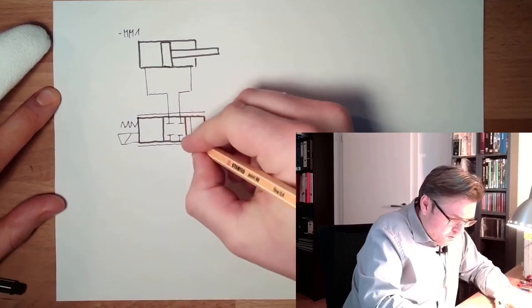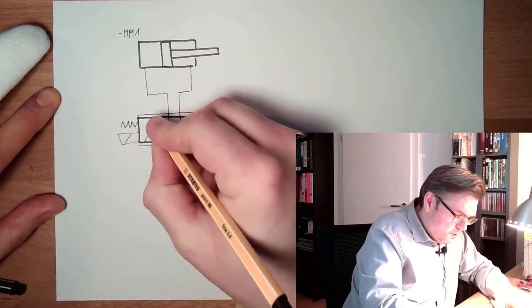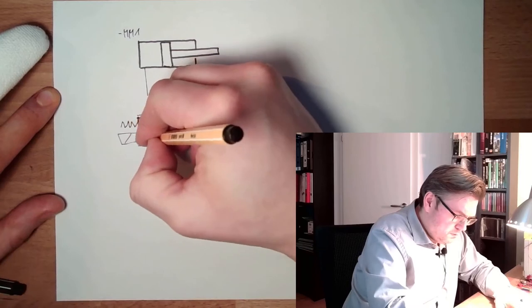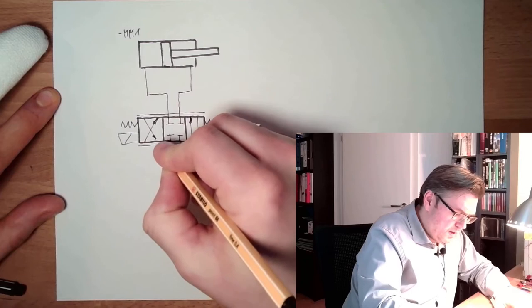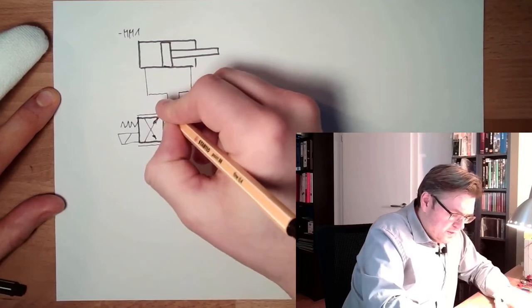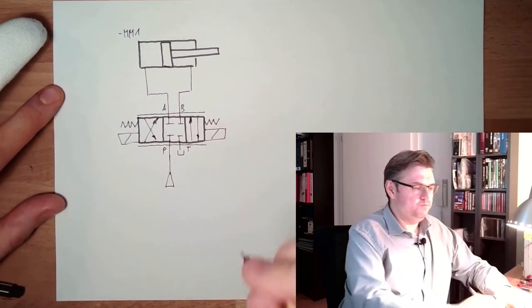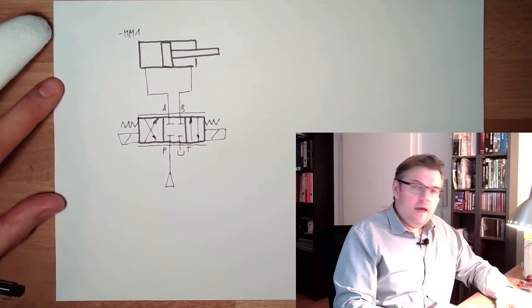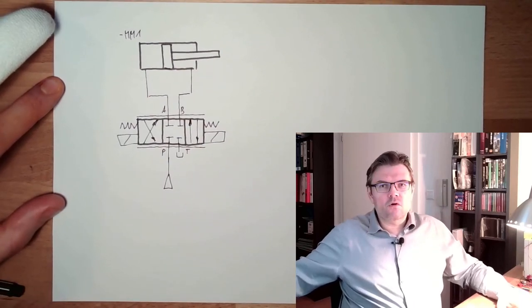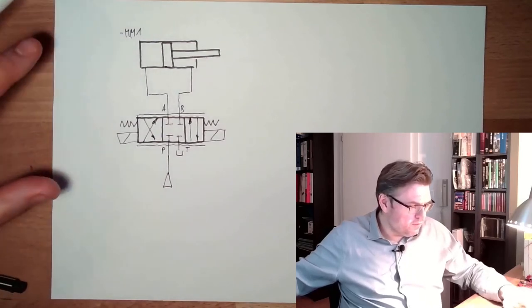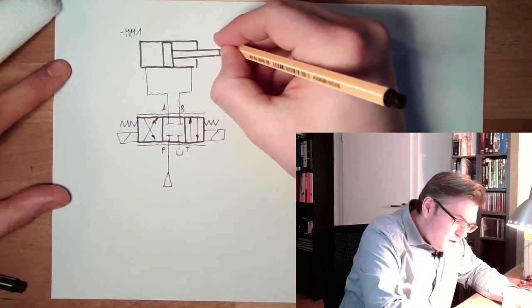Middle position with springs, operated by proportional magnets. One is straight position, the other one is the cross position. So here we go to the tank, that's the pressure line, that's A and B. And here we have the pressure. And we measure the location of the cylinder.